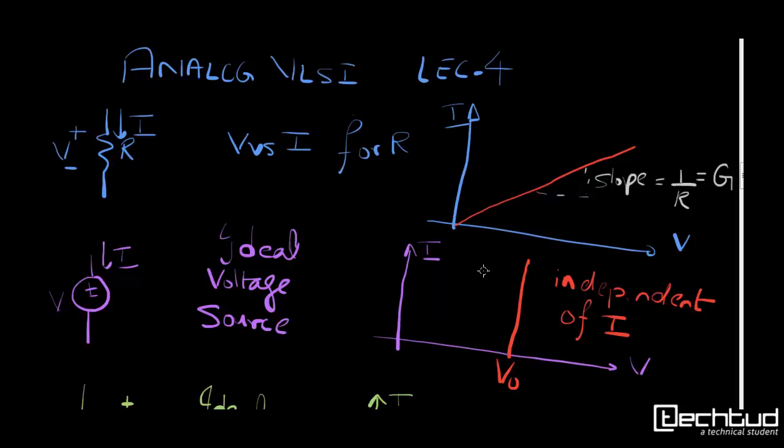So V versus I for resistance, as we can see it's a linear line with slope G. G is nothing but inverse proportional to resistance.